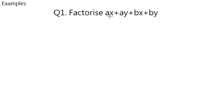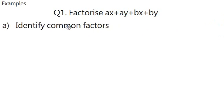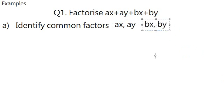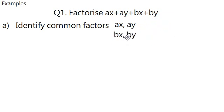So for question one, factorizing AX plus AY plus BX plus BY — that is a bit tricky when you first look at it, but after a while you start to know what to do. The first thing to do is identify common factors from those four terms. In this case, we can see that AX and AY have a common factor of A, BX and BY have a common factor of B. You can also shuffle it and say AX plus BX has a common factor of X.